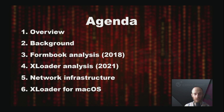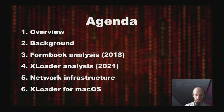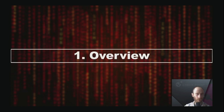This talk is divided into six chapters. We start with an overview of the malware, then speak about important milestones in the malware lifecycle. In the third chapter we get our hands dirty with Formbook analysis we conducted four years ago and discuss the complications we encountered. Then we speak about XLoader analysis we conducted a year ago and compare it to Formbook. In the fifth chapter we speak about network infrastructure. As a final touch, we describe the XLoader version for macOS.